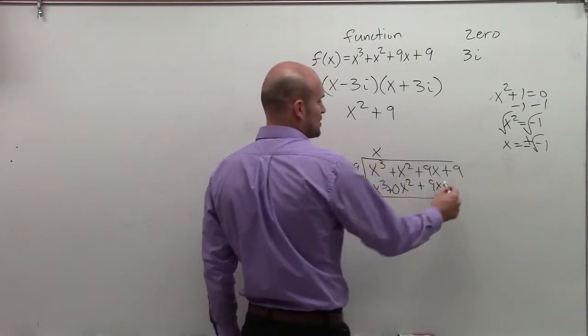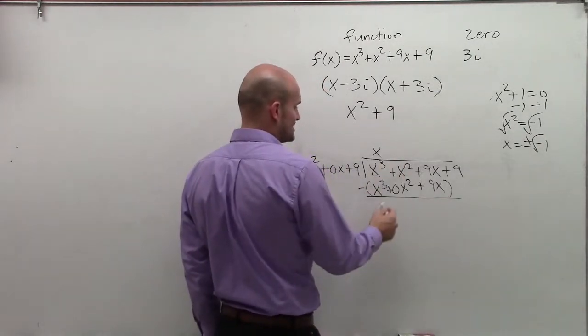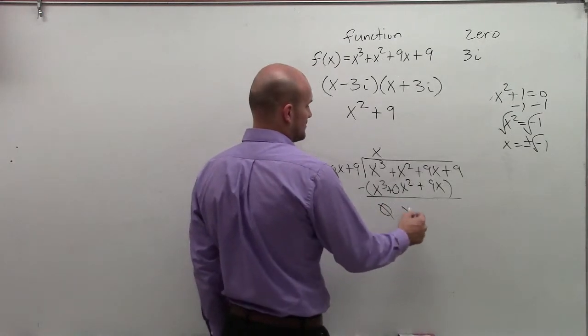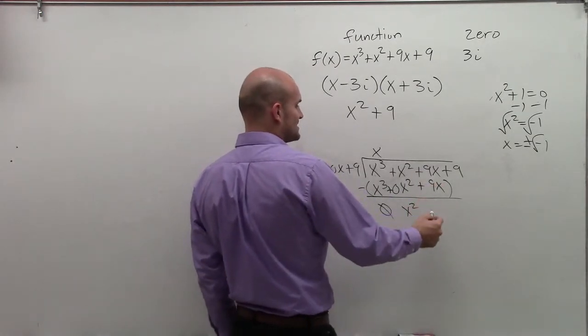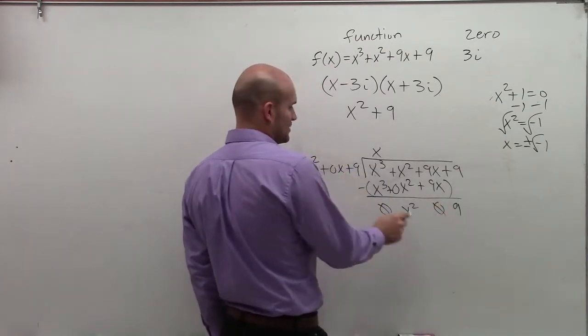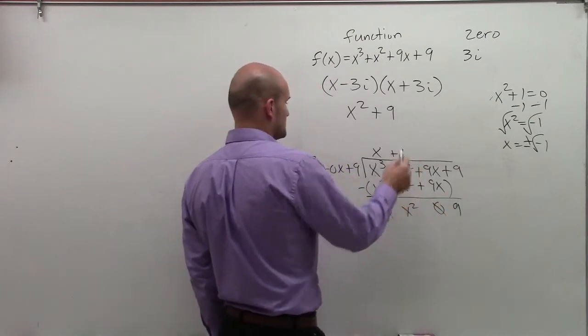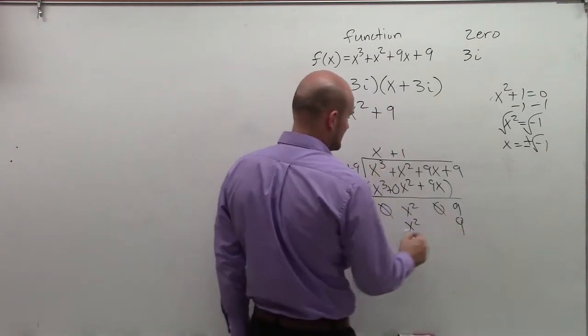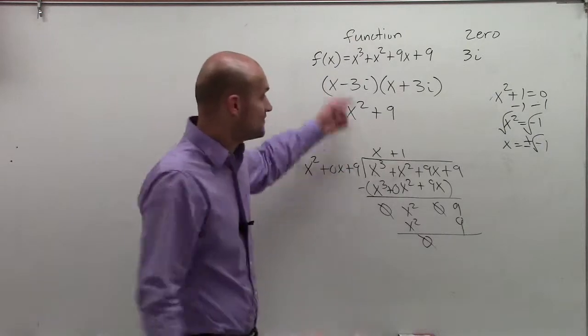Remember, to subtract the whole bottom, x squared minus x squared is just going to give you x squared. 9x minus 9x is just going to give you 0. Bring down the 9. x squared goes into x squared plus 1 times. 1 times x squared is x squared. 1 times 9 is 9. Subtract 0, 0. So therefore, my other zero is going to be x plus 1.